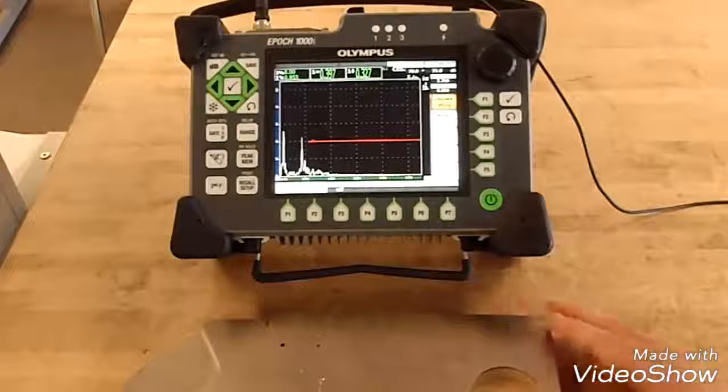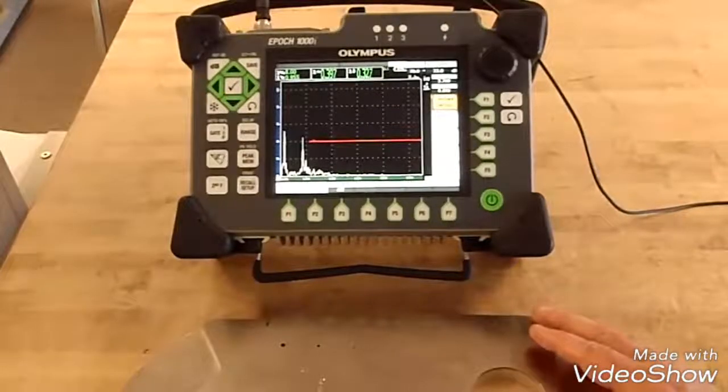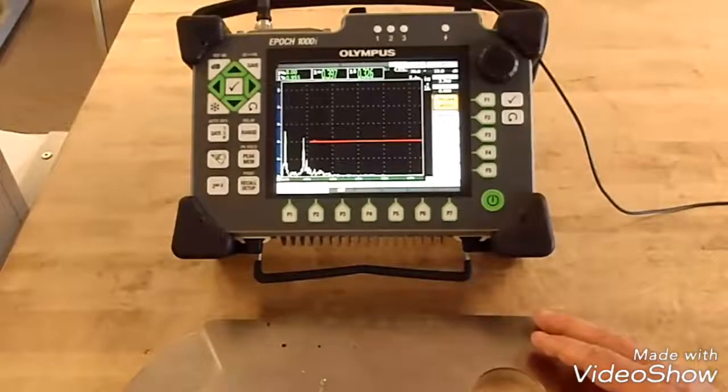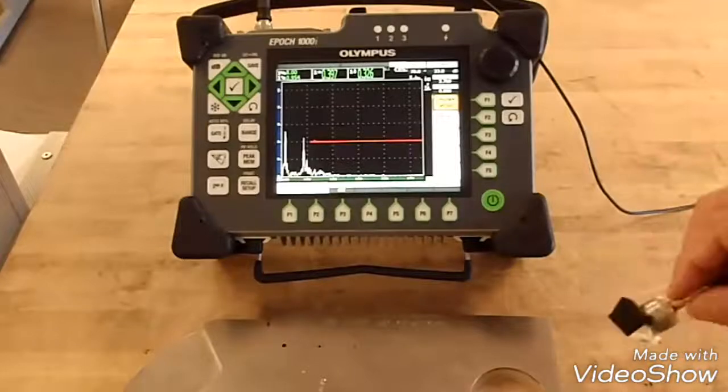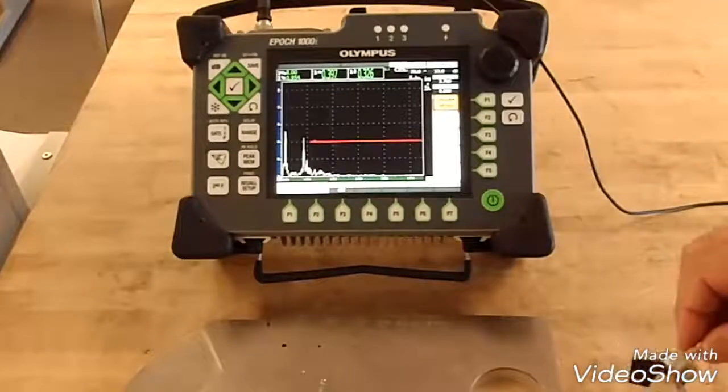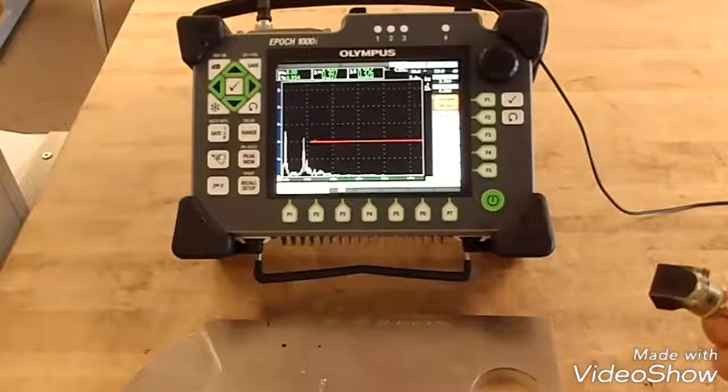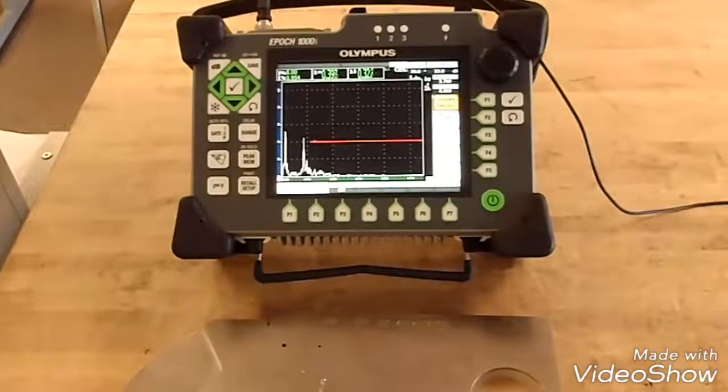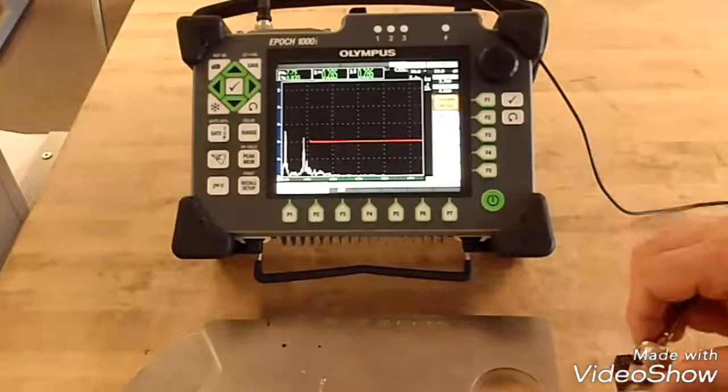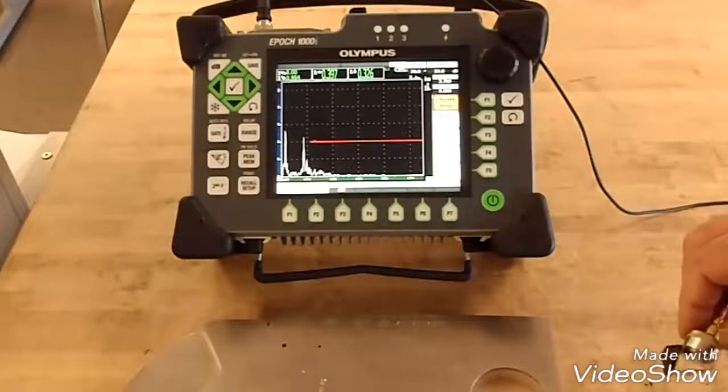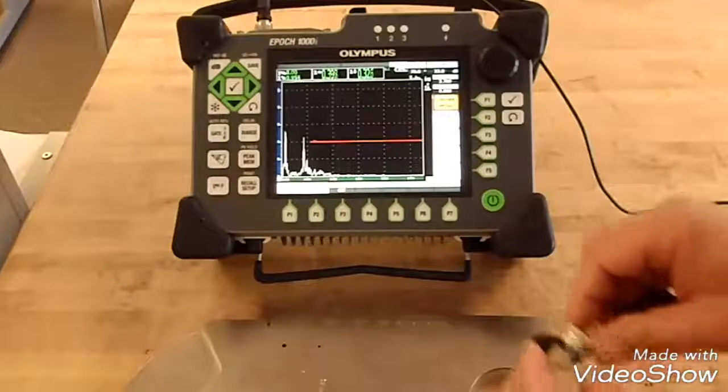Today we're going to calibrate the Olympus EPIC 1000i for an angle beam test using a two and a quarter megahertz half inch transducer with a 45 degree carbon steel wedge. Before you calibrate, make sure that you couple your transducer to your wedge.